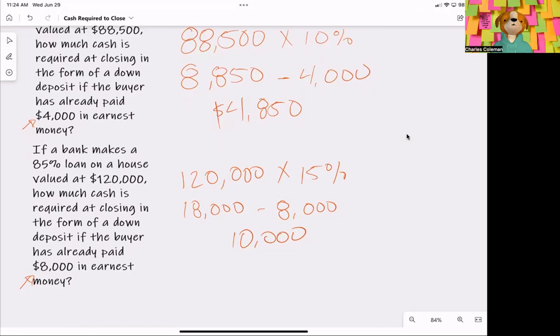So the purchase price is 100%. We figure out what the bank is bringing, and whatever that gap is, is how much the buyer needs to bring for a down payment. We take that gap and subtract the earnest money, and that is the money we need to bring to the closing table to close on the loan. I hope that was helpful. Stay tuned for more tips to pass your real estate exam.